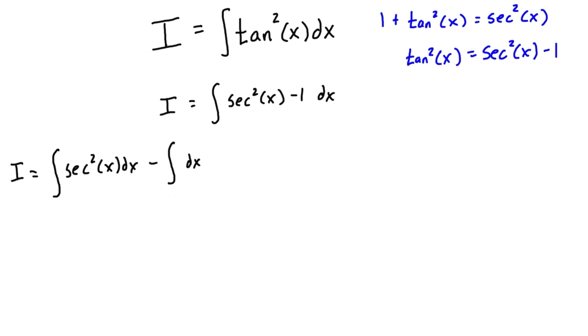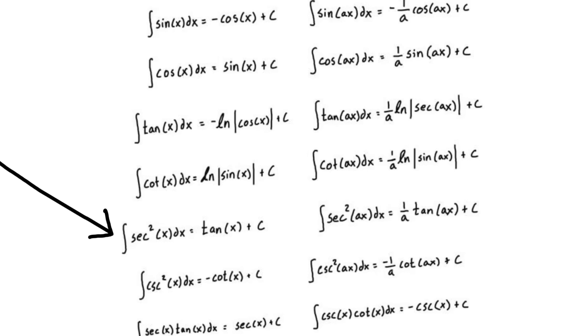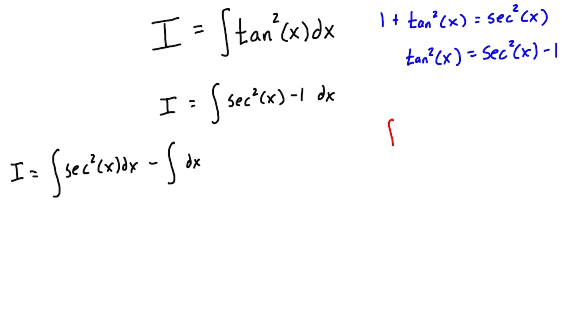Now when we look in our integral table, we can see that there is an entry for the integral of sec²(x)dx, which is equal to tan(x) + C. So let's write that down on our sheet. So that was ∫sec²(x)dx - this is exactly equal to tan(x) + C, the arbitrary constant.